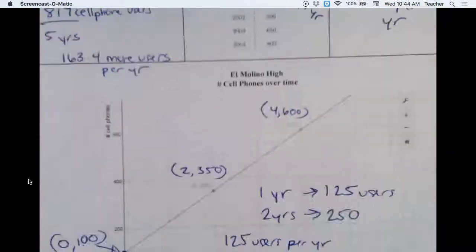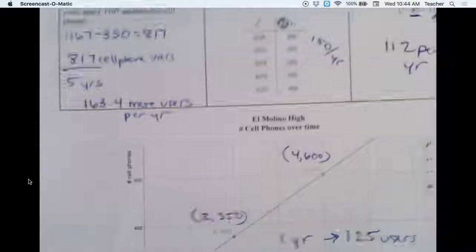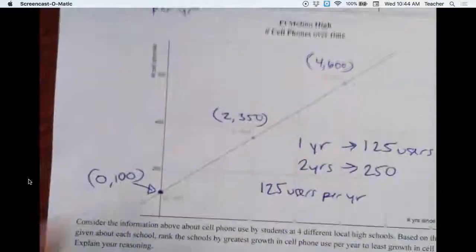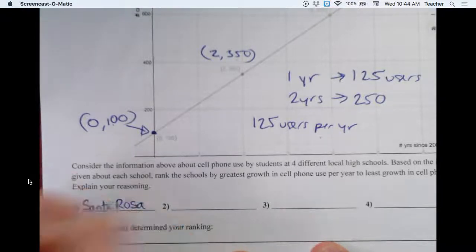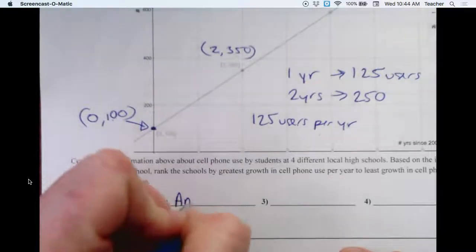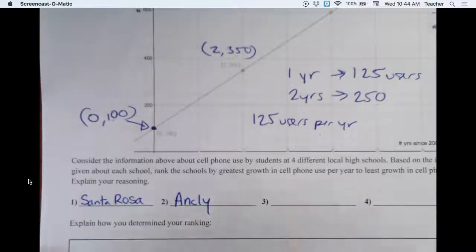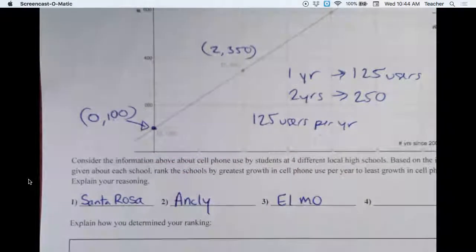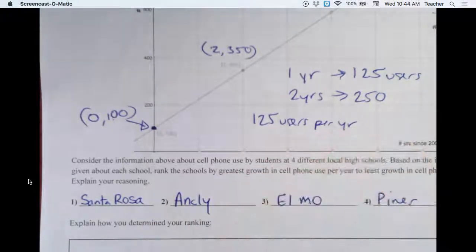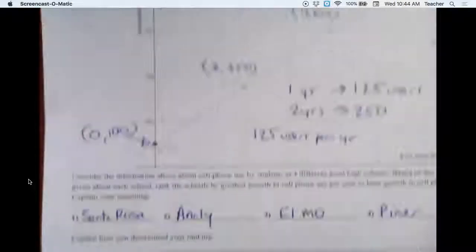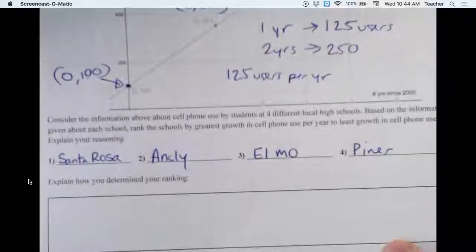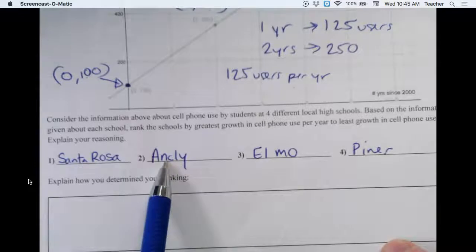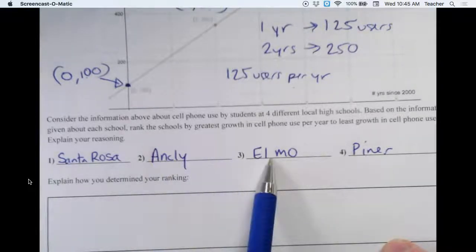We have enough information to rank them. We had Santa Rosa at 163.4, so that was the fastest growth. The next fastest growth was 150, which was Annaly. The next fastest growth was El Molino at 125. And the next fastest growth was Piner, or the slowest growth, at 112. Explain how you determined your ranking - I might list out my different rates that I calculated per year and show that they're going in descending order with Santa Rosa at 163, Annaly at 150, El Molino at 125, and Piner at 112.